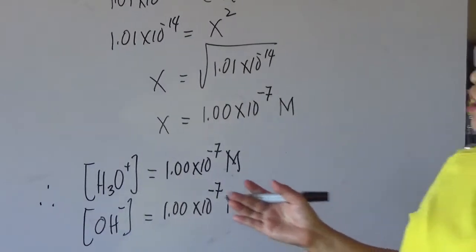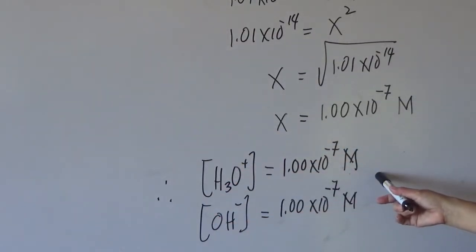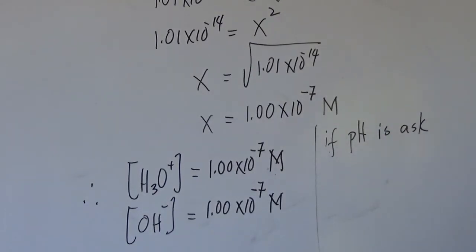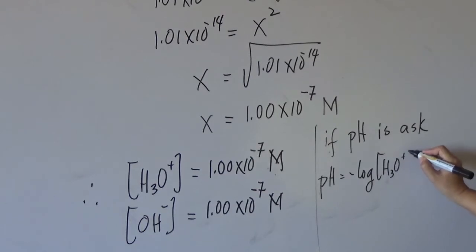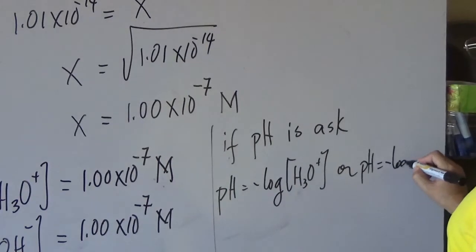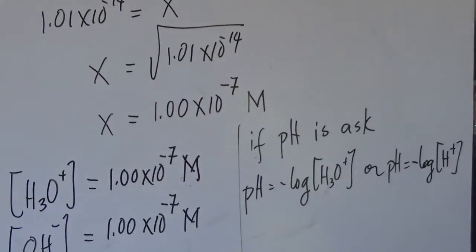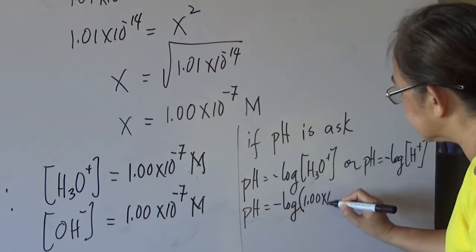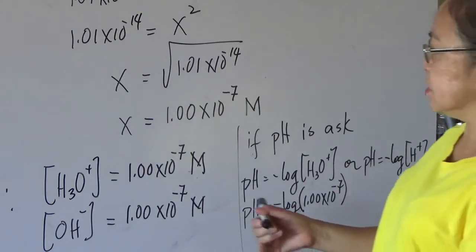Just in case you are asked to determine the pH of water at 25 degrees Celsius — since you have the concentration of the hydronium ion, you can use: pH equals negative log of the hydronium ion concentration. So that would be negative log of 1.0 times 10 to the negative 7, which equals 7. So the pH of water at 25 degrees Celsius is 7.